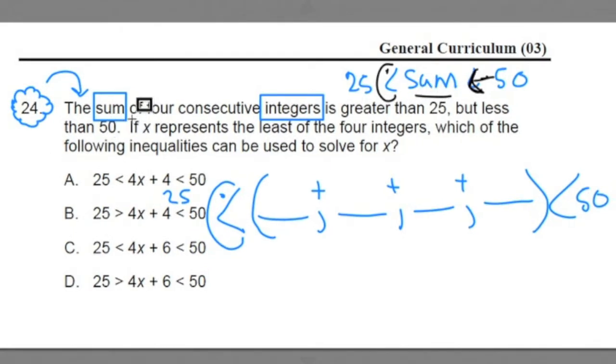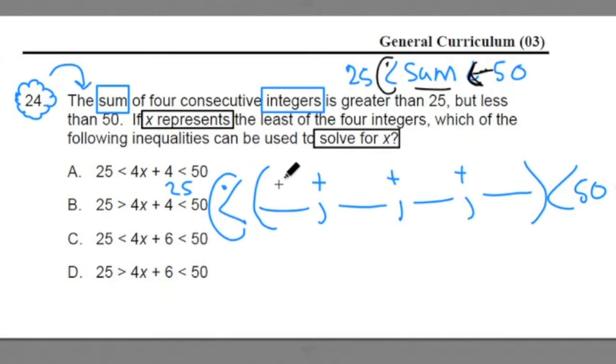Now the algebra. We're going to take this number sense framework and turn it into an algebraic inequality. We do that by representing our starting point as a variable. They tell you the smallest integer is x. The second number in terms of x would be x plus 1 because it's a consecutive integer. The third one would be x plus 2, and the fourth one would be x plus 3.